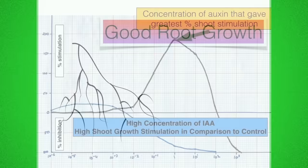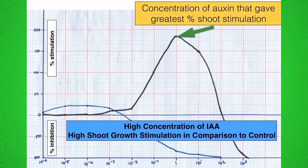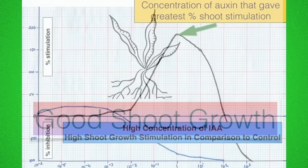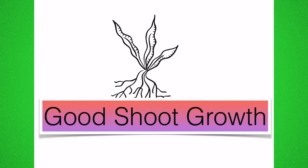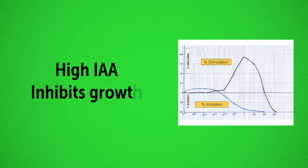The opposite seems to be true for the shoots. At higher concentrations there was a greater deal of percentage shoot stimulation as compared with the control. So at higher concentrations of IAA the shoots appear to grow more or to be stimulated more than the control. It should be noted that very high IAA concentration inhibits growth of shoots and of roots.